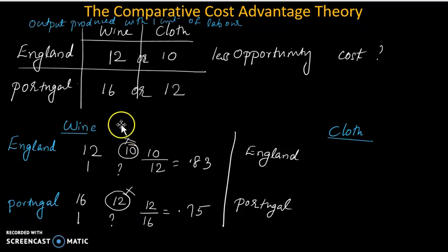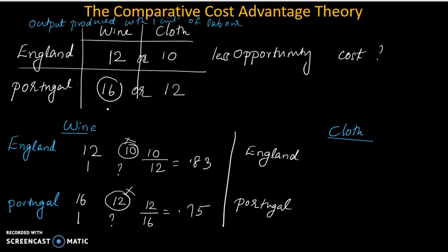Less value is less. So in the same category, wine production — if you have less opportunity cost, you can get a comparative advantage.